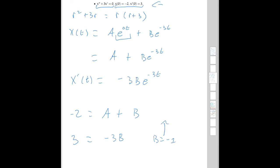And then we can go up here to the top. If B is equal to minus 1, this equation says minus 2 is equal to A minus 1. In other words, minus 1 is equal to A, so A is equal to minus 1. And so the solution to the initial value problem is minus 1 minus minus e to the minus 3t.